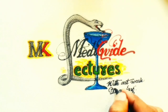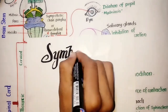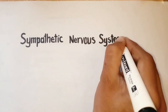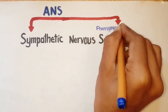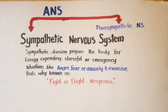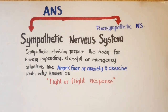Welcome to my channel MK Maryguide Lectures, learning with artworks like drawing and calligraphy. In this video we will discuss the sympathetic nervous system. The sympathetic nervous system is a division of the autonomic nervous system, along with the parasympathetic nervous system. The sympathetic division prepares the body for energy-expending, stressful, or emergency situations, which include anger, fear, or anxiety, as well as exercise. That is why this division is known as the fight-or-flight response.